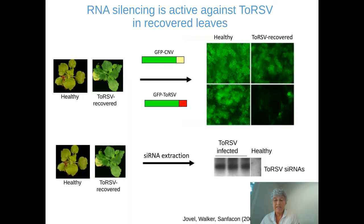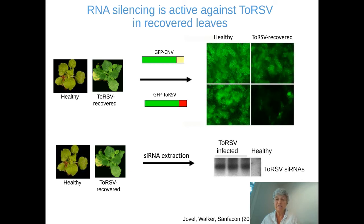We also used northern blots to look for small RNAs specific for tomato ring spot virus, and we could show that indeed there are ToRSV-specific small RNAs active in these leaves. So RNA silencing is active, but it's not managing to bring down the concentration of viral RNA. So something else is happening.